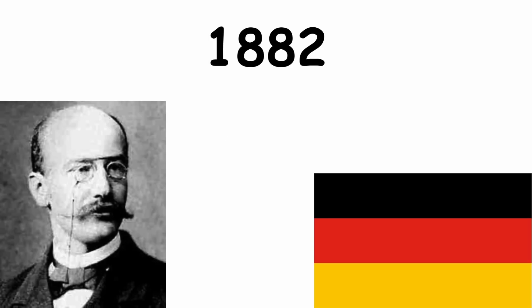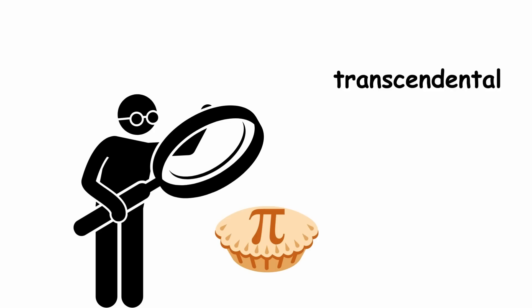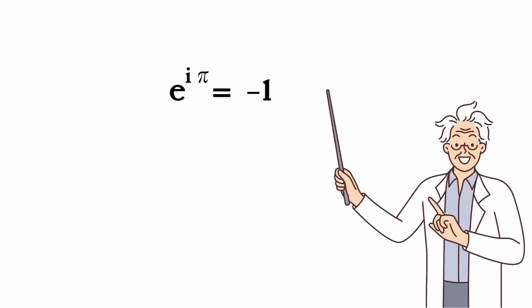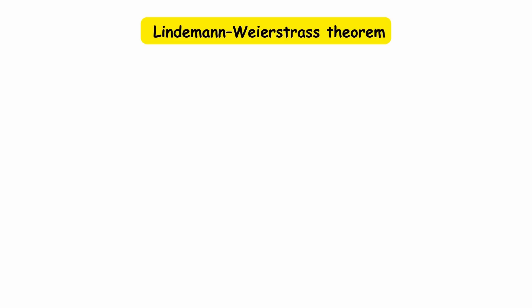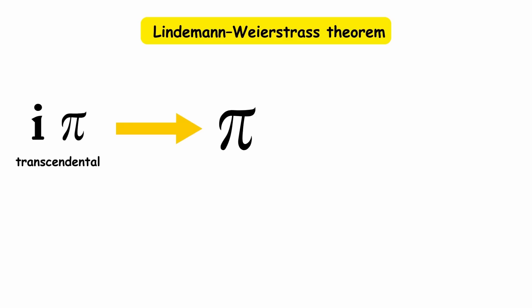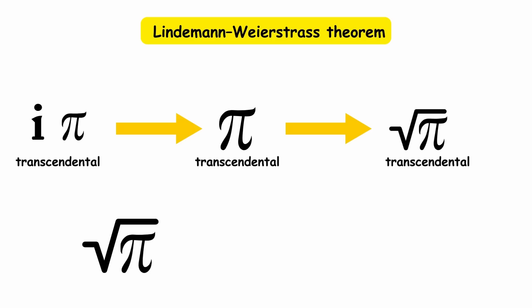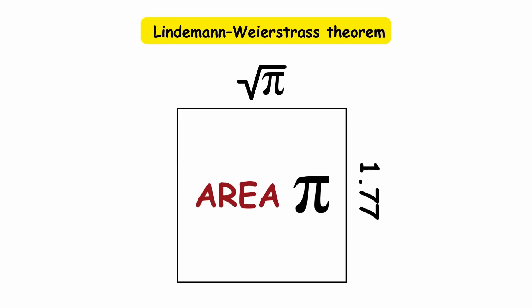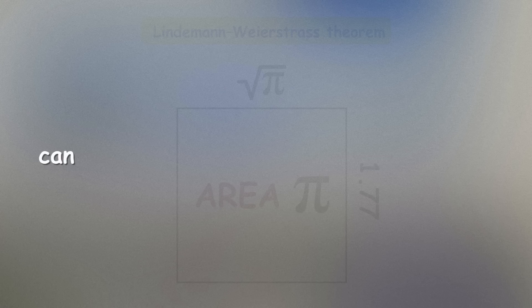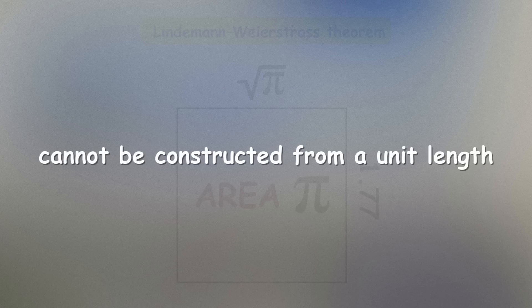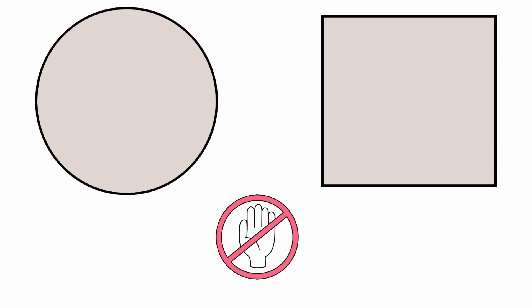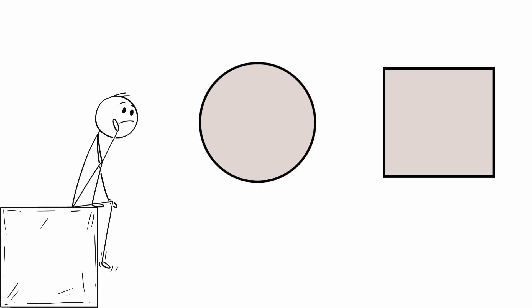However, it would take until 1882 for German mathematician Ferdinand von Lindemann to prove that pi is transcendental. The proof relied on the identity e to the power of i pi equals negative 1. The fact that e is transcendental, combined with the Lindemann-Weierstrass theorem, shows that i pi must be transcendental — proving that pi is transcendental, proving that the square root of pi is transcendental, proving it is not constructible, and therefore proving that squaring the circle is impossible, finally solving this millennia-old problem.